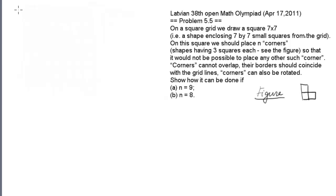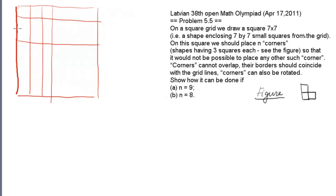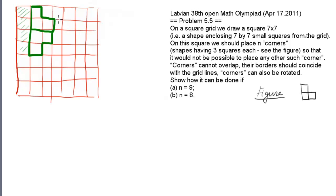In the last problem we start with a square grid. Let's draw a square 7 by 7, and now let's place the corner shapes. Let's place the first shape like this.